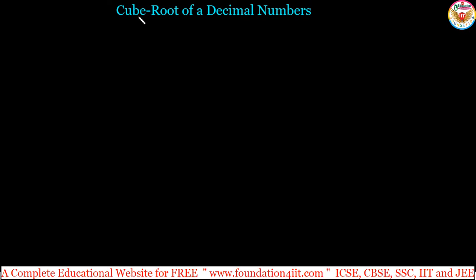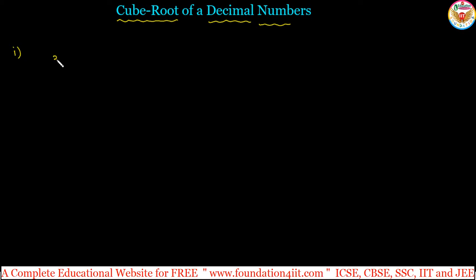How to find the cube root of decimal numbers? When you want to find the cube root of decimal numbers, the first step is to convert the given decimal number into a fractional number, and then you can find the cube root. For example, what is the cube root of 0.027?